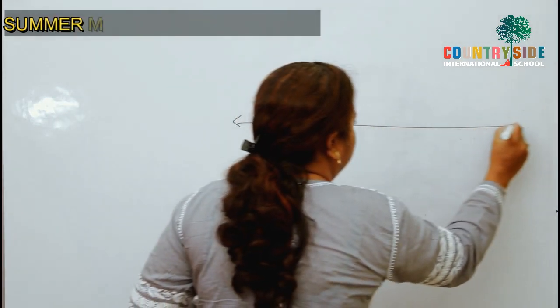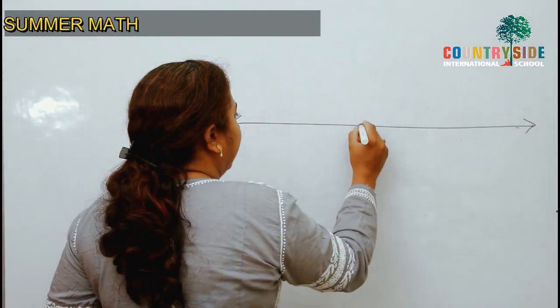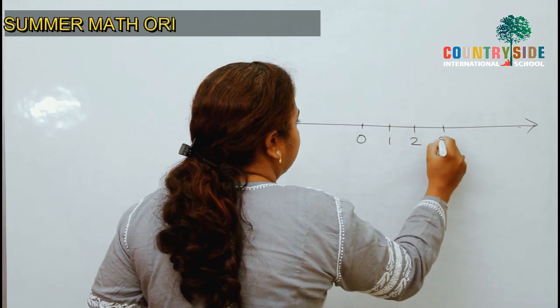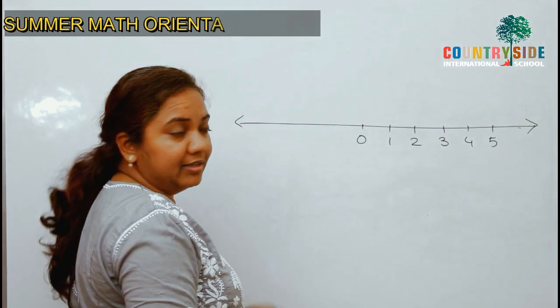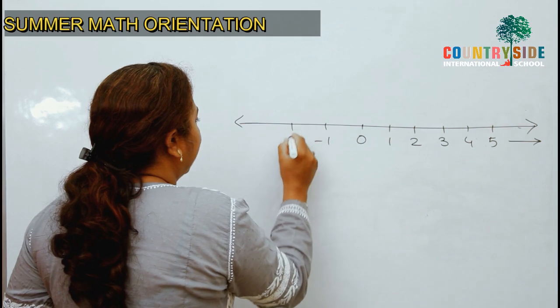You know a number line, right? What is a number line? It is representation of numbers on a line. Representation of numbers on a line. That is called a number line.